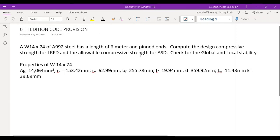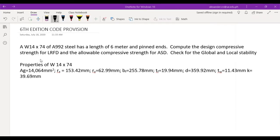Okay, so let's begin. Similar to 4th edition, let's begin with KL over R. So the KL over R, we go directly to Ry. Since they have the same length for both axes, X and Y, what will govern the slenderness ratio will be the weaker axis. So that will be K equals 1, length is 6 meters, so that will be 6000 millimeters divided by 62.99 millimeters. The answer is 95.25.